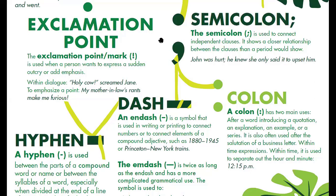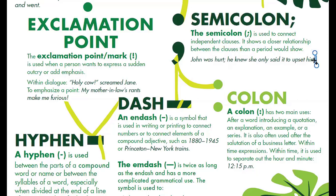Semicolon is used to connect independent clauses. Independent clauses means independent sentences — a sentence that can stay alone, which doesn't need any other sentence or phrase to make it complete. For example, if I put a period here instead of a semicolon — 'Joan was hurt.' — that's fine, then I start a new sentence with a capital: 'He knew she only said it to upset him.' That is also correct. You can end independent sentences with a period.